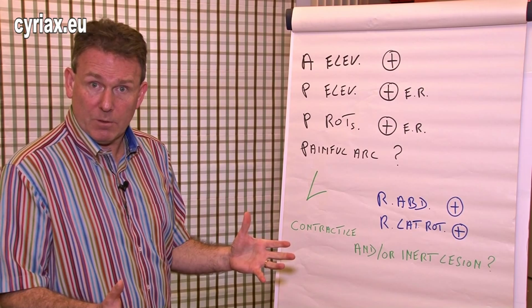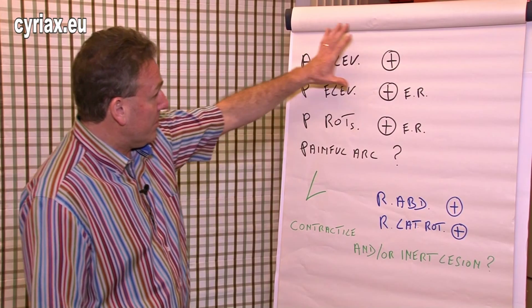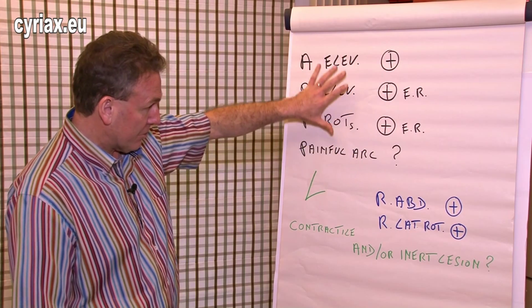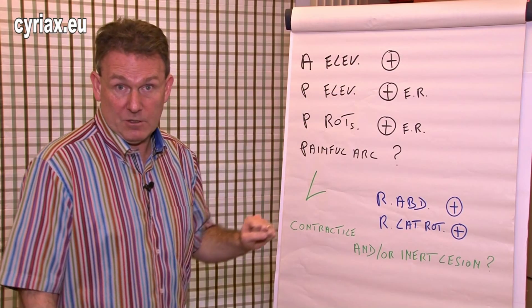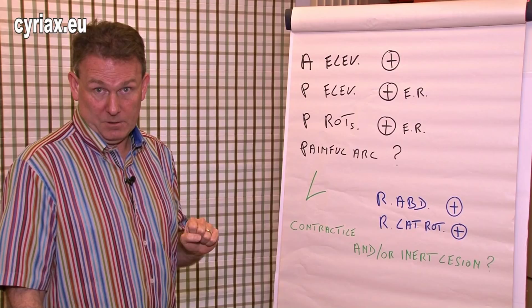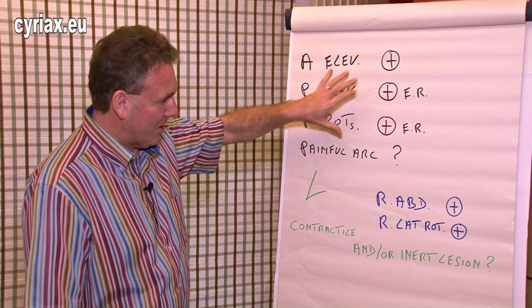So what is the problem? Well this points in the direction of some kind of inert lesion. It is obvious that this is a clear non-capsular pattern, so perhaps we could think of a bursitis.